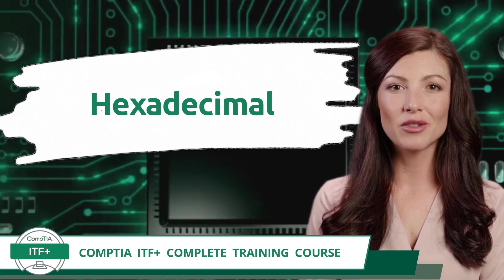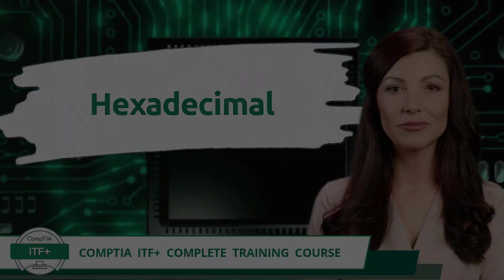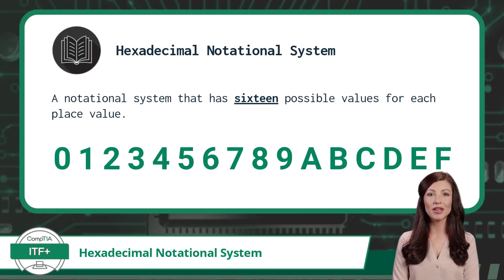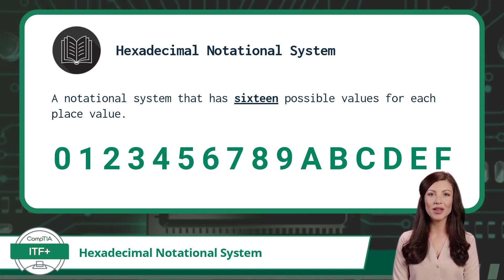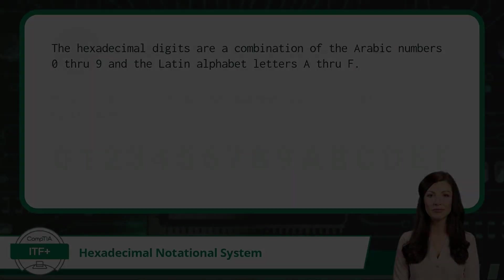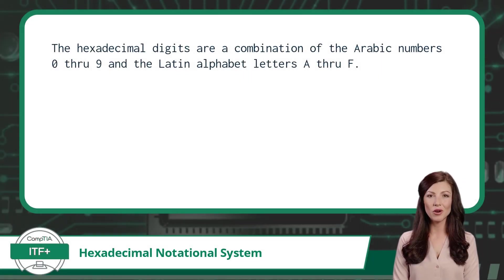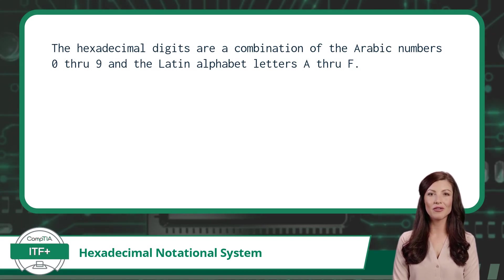The hexadecimal notational system is a notational system that has 16 possible values for each place value. These values range from 0 to F. The hexadecimal values are a combination of the Arabic numbers 0 through 9 and the Latin alphabet letters A through F.